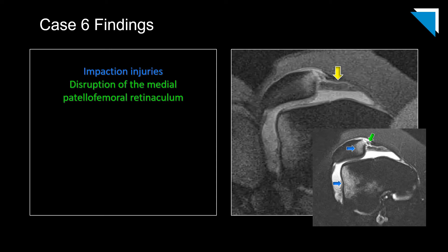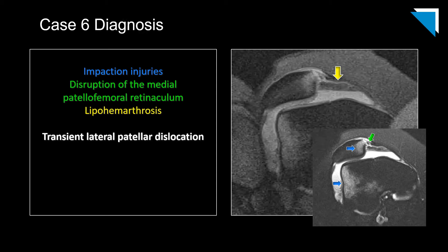There is also a large lipohemarthrosis; the fat component is somewhat easier to see on the proton density sequence. This constellation of findings is consistent with transient lateral patellar dislocation. One of the things I enjoy about musculoskeletal imaging is the search for injury patterns and mechanisms of injury. In this case, the injury results from a blow to the medial aspect of the knee, resulting in lateral patellar dislocation.